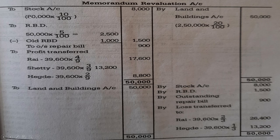Now for the revaluation account: Stock Rs. 80,000 at 10% depreciation = Rs. 8,000 (debit). Reserve for bad debts: 50,000 × 5% = 2,500, less existing 1,000 = Rs. 1,500 (debit). Outstanding repair bill Rs. 900 (debit). Land and building appreciation: 2,50,000 × 20% = Rs. 50,000 (credit). Total credit side Rs. 50,000; debit side gives a difference (profit) of Rs. 39,600, distributed in old ratio 4:3:2 — Rai Rs. 17,600, Shetty Rs. 13,200, Egde Rs. 8,800.